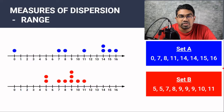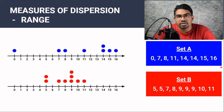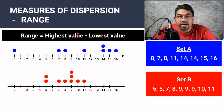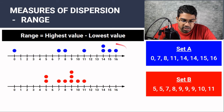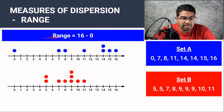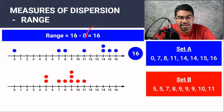Let's start with range. Range is the easiest measure of dispersion to calculate. It only involves the highest value and the lowest value. Range is calculated by subtracting the lowest value from the highest value. The highest value in set A is 16 and the lowest value is 0. So the range for set A will simply be 16 minus 0, which gives us 16.